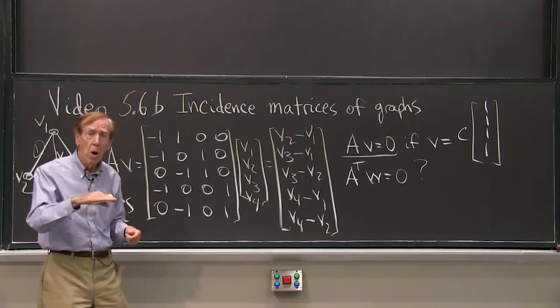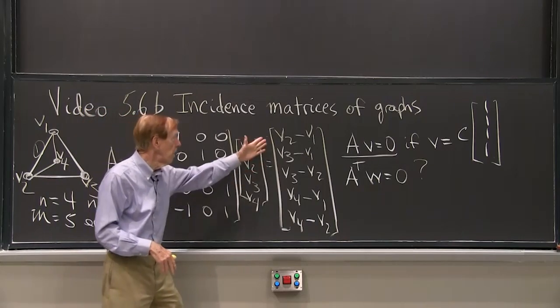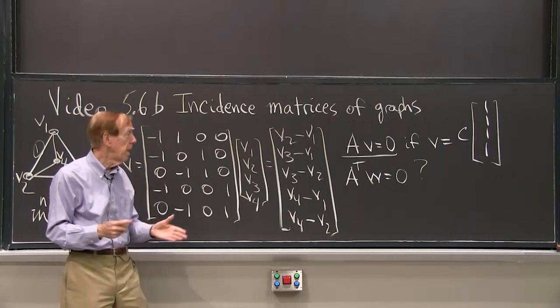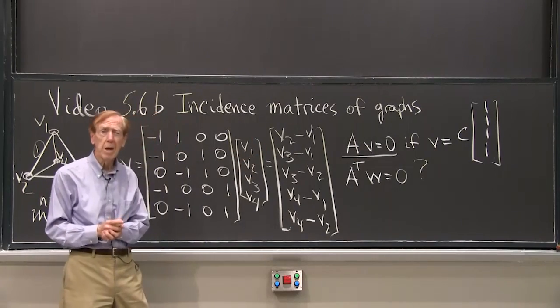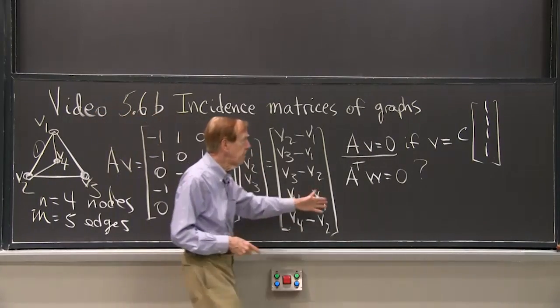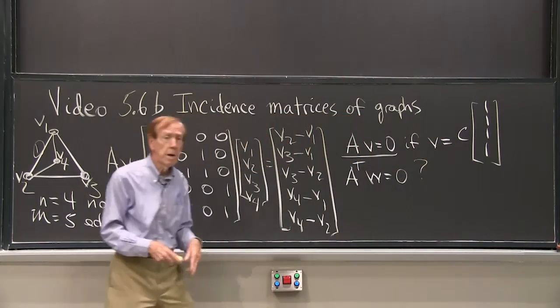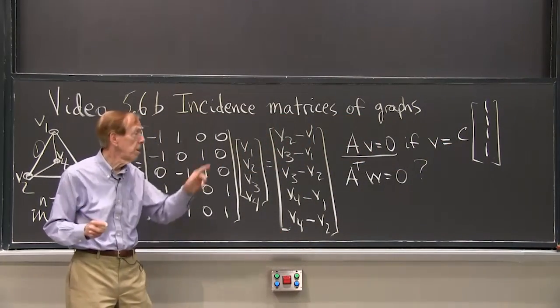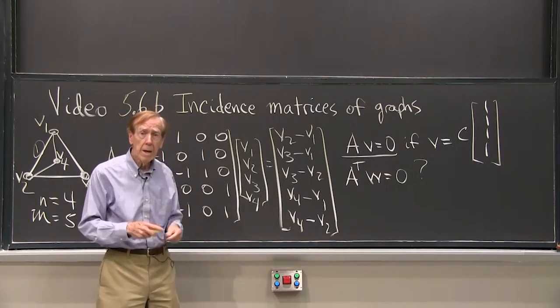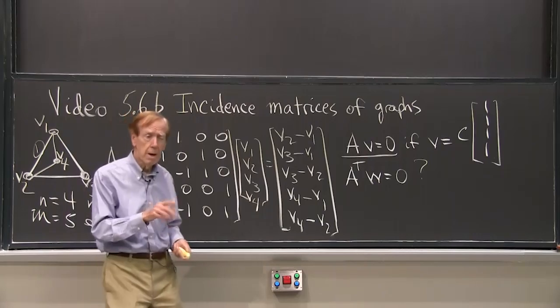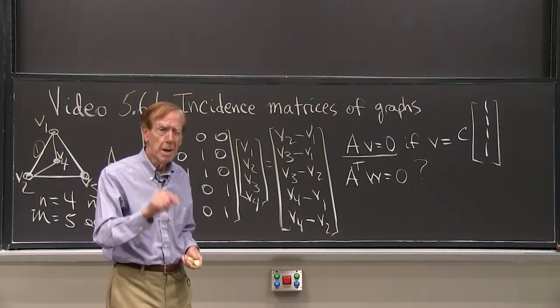And those are all the solutions. The only way I could make all those 0 would be for all the v's to be the same. So all the v's have to be the same. v is c, c, c, c. And I learned something important. Av equals 0 has some solutions. And I'll just jump ahead one electrical moment. That's not good if we want an invertible matrix.